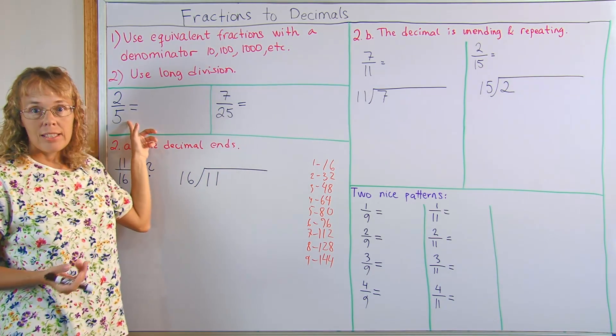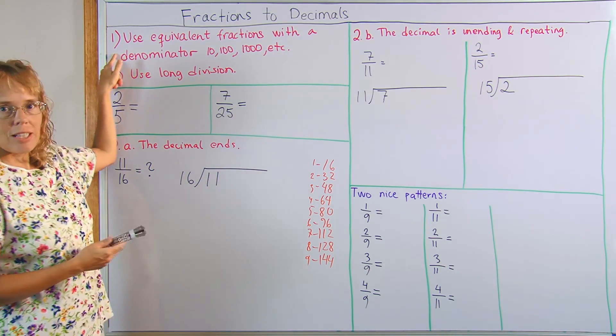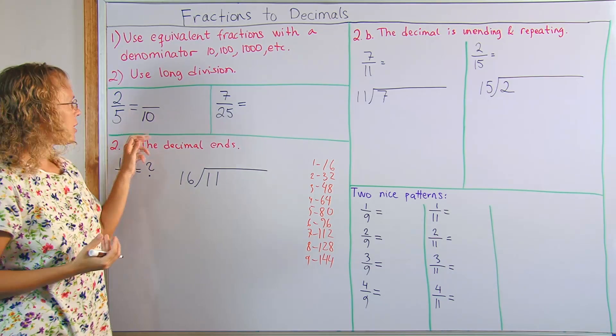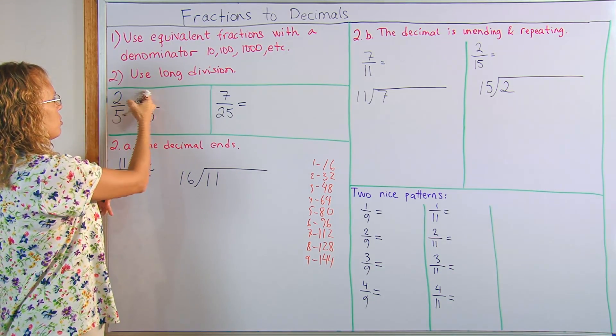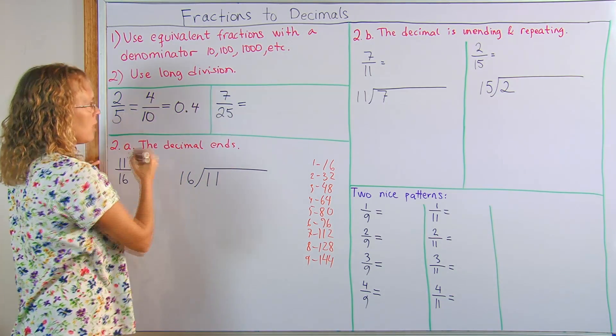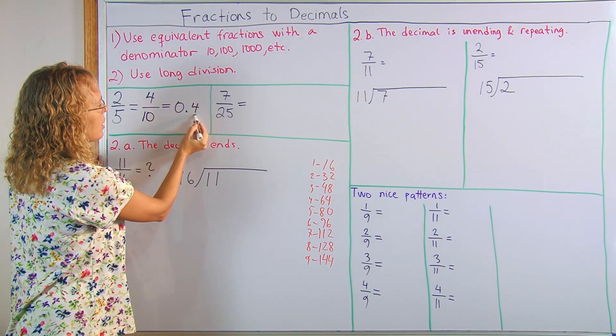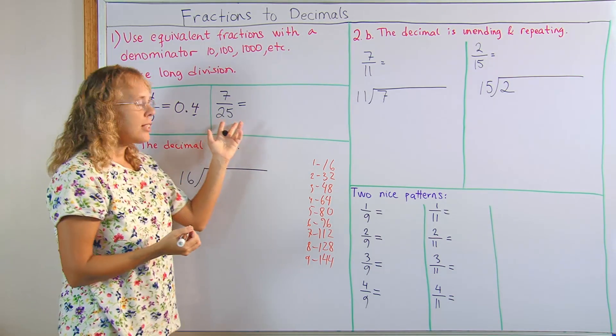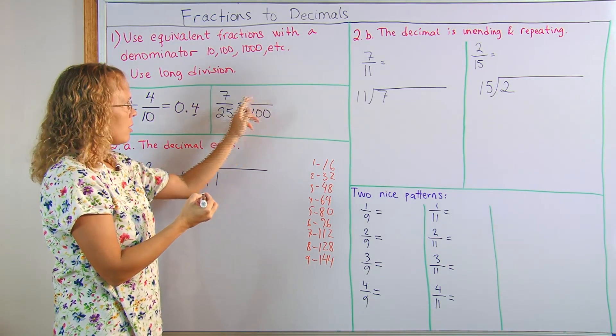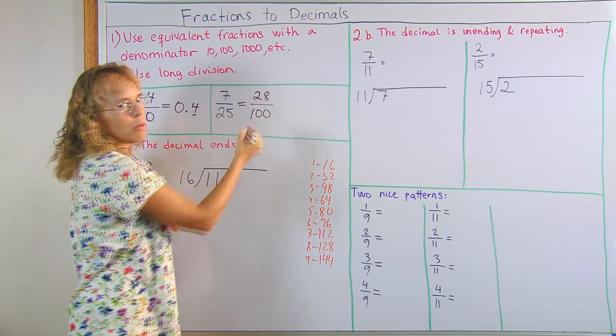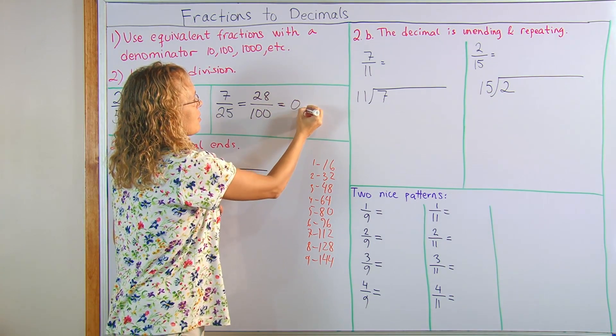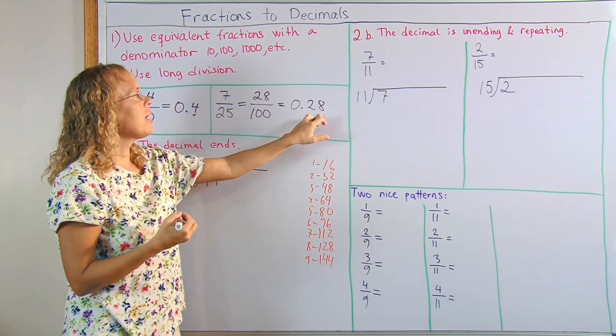Two fifths is an easy fraction to change into a decimal. We can use method number one because I can easily write an equivalent fraction that has a denominator 10. Five times two, two times two, right? Four tenths. And so this as a decimal is of course four tenths, 0.4, because here are tenths, here's the tenths place, four tenths. This one I can write it easily with a denominator 100. 25 times four, so seven times four, we get 28 hundredths, and then that is as a decimal 28 hundredths, 0.28.